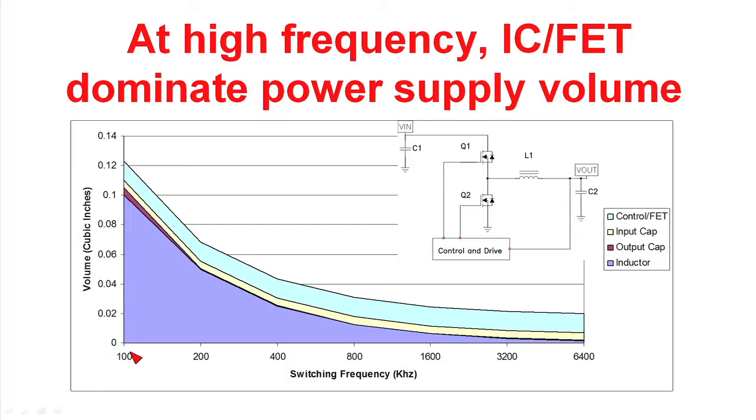In a typical hundred kilohertz switcher that we have over here on the left, we'll see that the volume is dominated by the output filter inductor. And as we are able to move to higher and higher operating frequencies, we'll see its volume diminish. We'll see the volume of the output filter capacitor diminish.